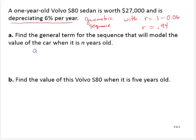So then we have a sub n is equal to a sub 1 times r to the n minus 1. So a sub n is equal to a sub 1, the value at one year was 27,000, the r is 0.94, and raise that to the n minus 1 power.